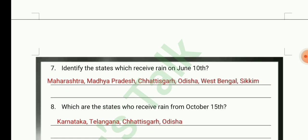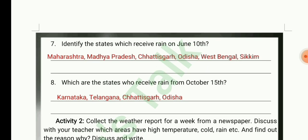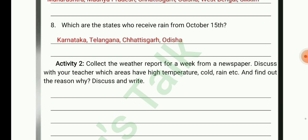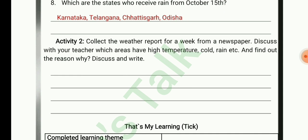Identify the states which receive rain on June 10th: Maharashtra, Madhya Pradesh, Chhattisgarh, Odisha, West Bengal, and Sikkim. Which states receive rain from October 15th? Karnataka, Telangana, Chhattisgarh, and Odisha.